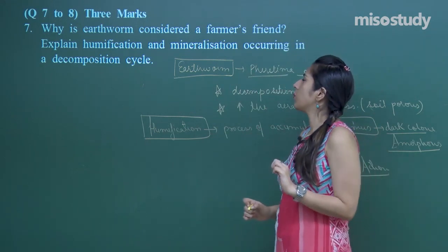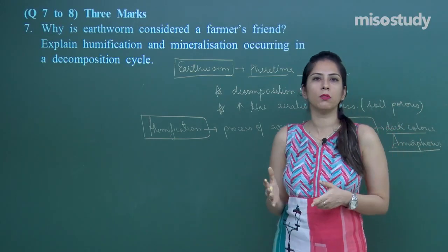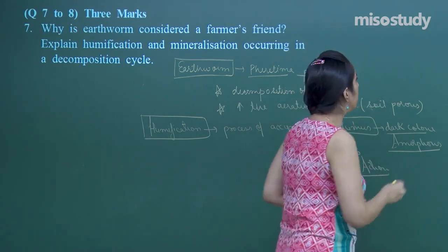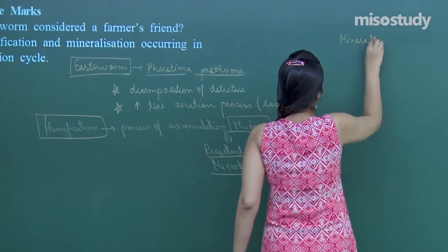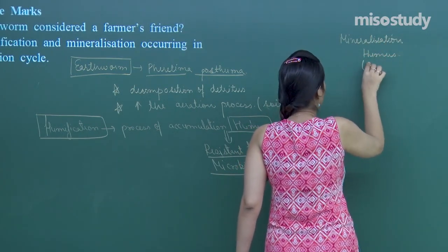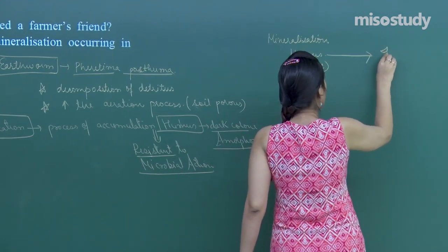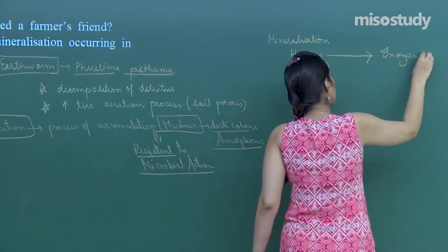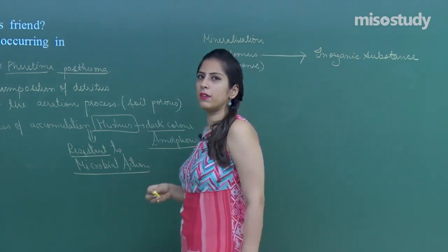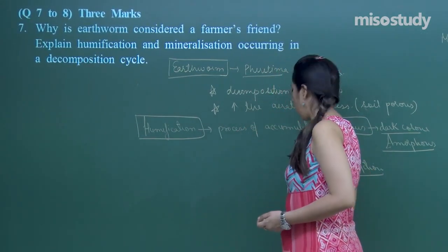Mineralization is the process where humus is broken down into smaller inorganic substances, releasing minerals and nutrients. So humus, which is an organic substance, is broken down into inorganic substances, resulting in the release of nutrients — this process is called mineralization. That was question number seven.